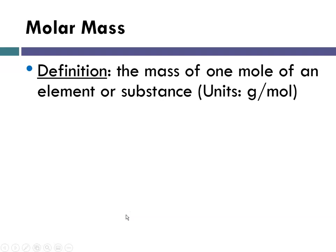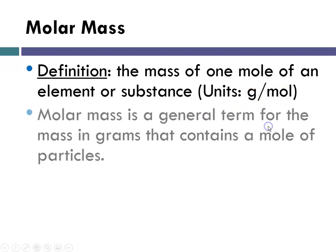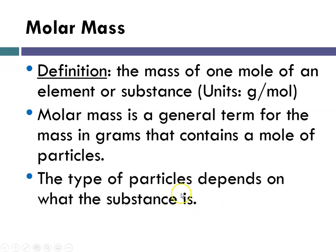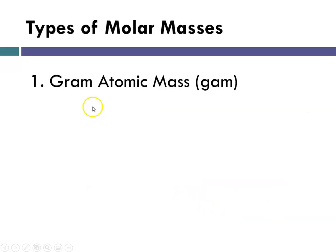So let's talk about molar mass. The definition of molar mass is the mass in grams of one mole of an element or substance. So its units would be grams per mole. This many grams equals one mole. And molar mass is really a general term that we use for the mass in grams that contains a mole of whatever the particle is. And the type of particle is going to depend on what your substance is.